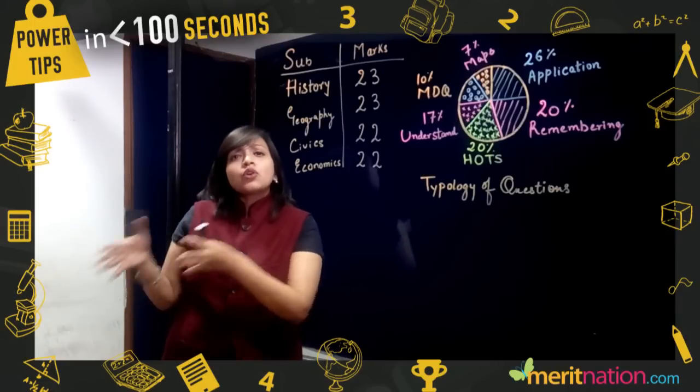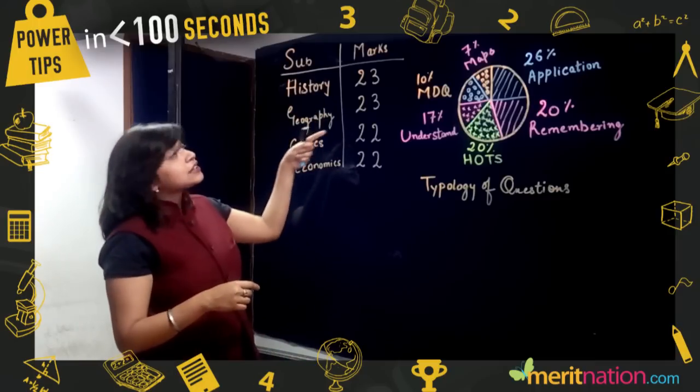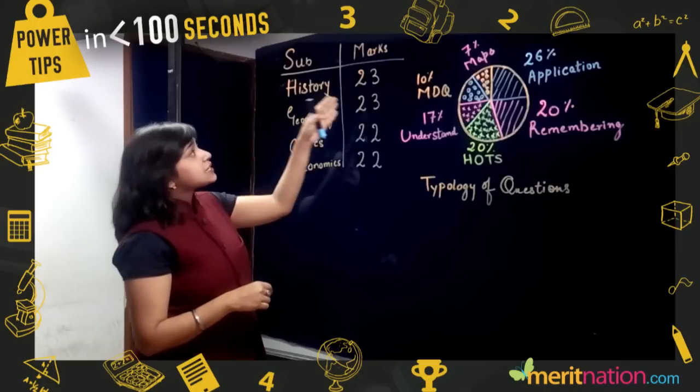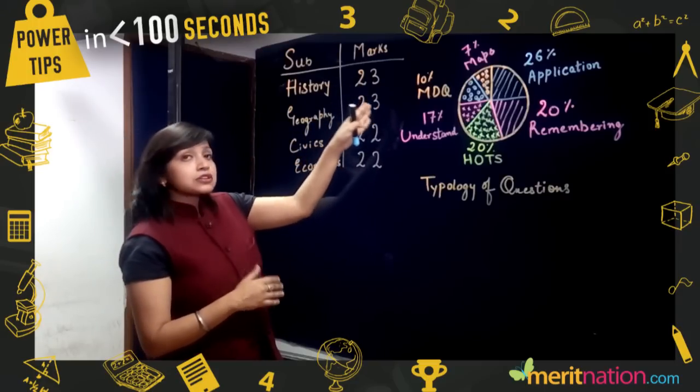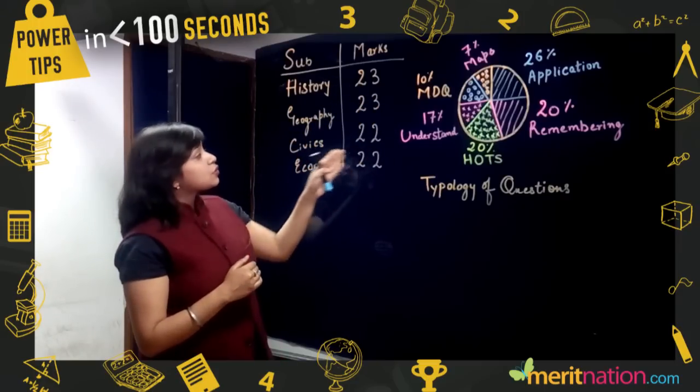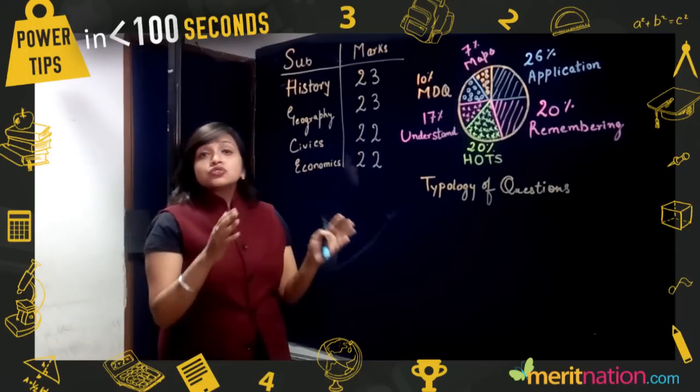As you can see here, every subject has equal weightage. From history, 23 marks of questions come; from civics, 22; economics, 22; geography, 23. So you actually cannot ignore any specific subject.